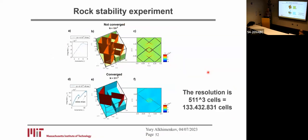I also repeated the same simulations in three dimensions. The resolution is 500 cube — so the total resolution is more than 100 million grid cells. It's impossible to do this using another solver because we cannot solve a system of linear equations for 100 million elements. Using a relaxation method, we can achieve such high resolution.